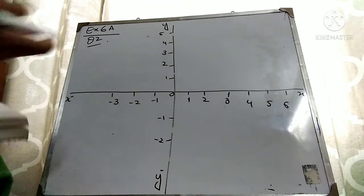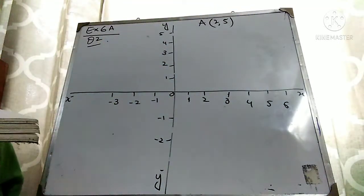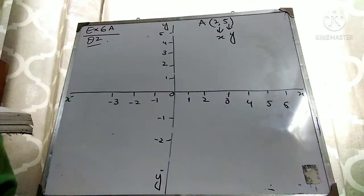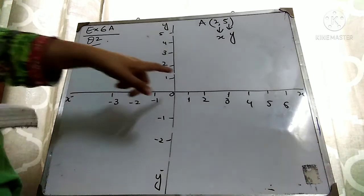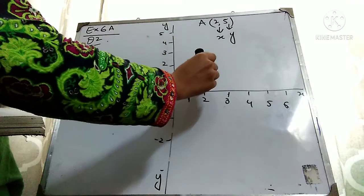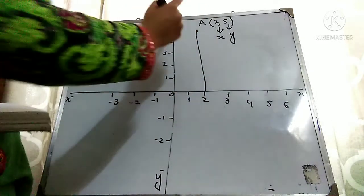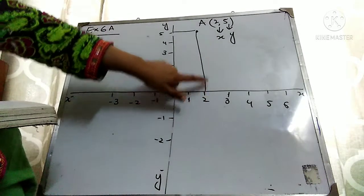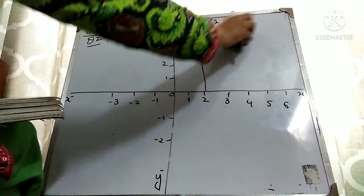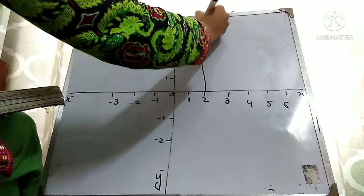Now I will plot the points. Point A is at (2, 5). Remember that in coordinates, the first value represents X and the second value represents Y. See where the value of X is 2 — here it is. And where the value of Y is 5 — here it is. Draw from X=2 up to Y=5. This is point A, coordinates (2, 5). Write down A and its coordinates (2, 5).